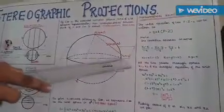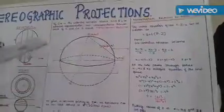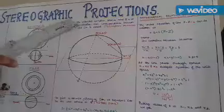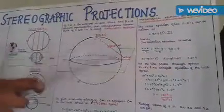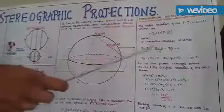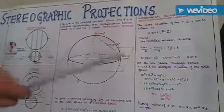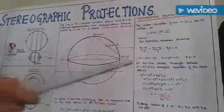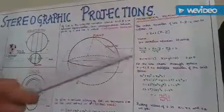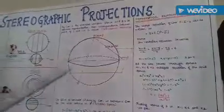Let us consider a point on the plane with coordinates x, i, y. We have pole as 0, 0, 1. If we need to write the equation of the line passing through these two points, we can write it as (x - x₁)/(0 - x) = (x₂ - y)/(0 - y) = (x₃ - 0)/(1 - 0). This gives us the equation of the line.